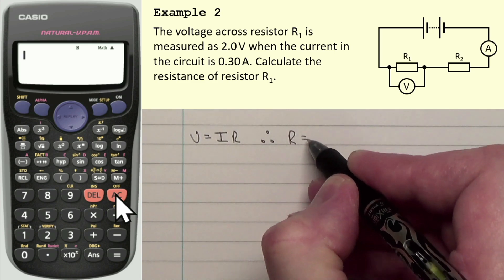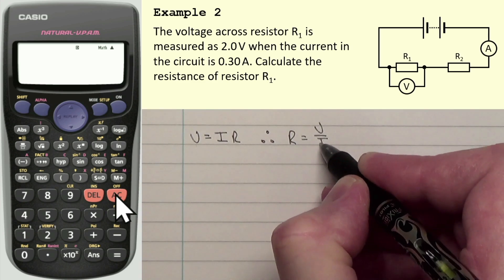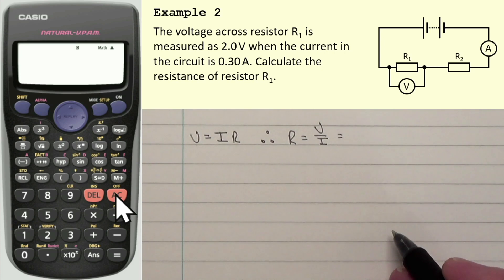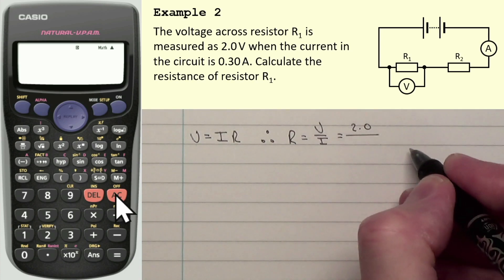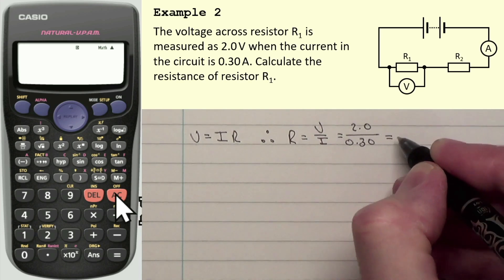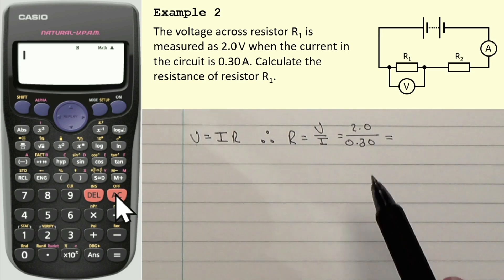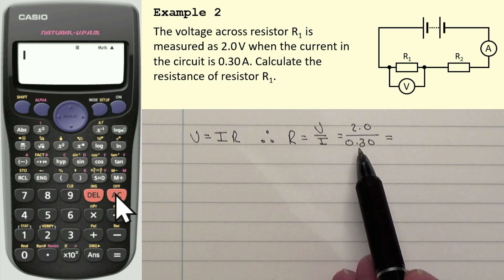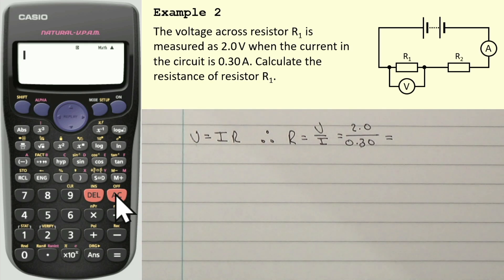And therefore, R is V over I. Substitute the two values. So our voltage is 2.0. Our current is 0.30. Now, hopefully you can already see that this is written to two significant figures. This one's written to two significant figures. So the final answer should really be written as two significant figures.